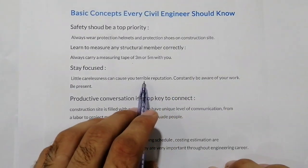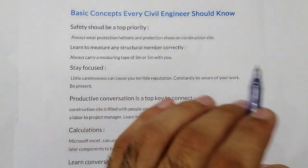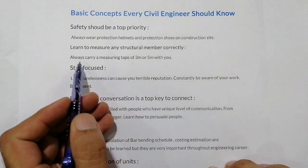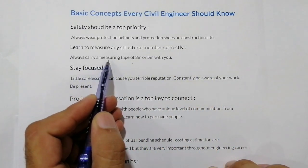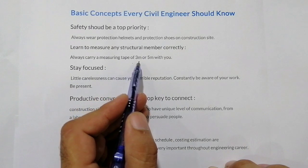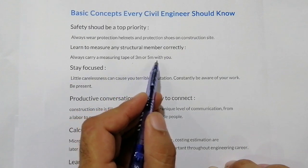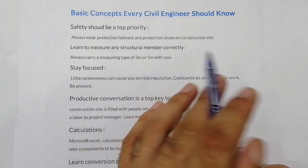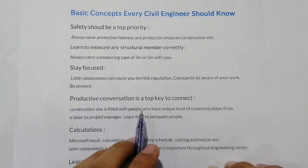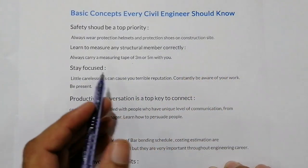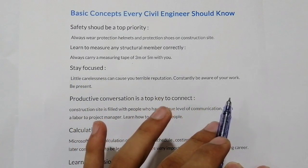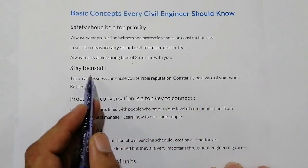Every civil engineer working on a construction site should always carry a measurement tape of 3 meters or 5 meters with themselves. The third concept is to stay focused — this is the main point.